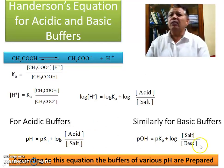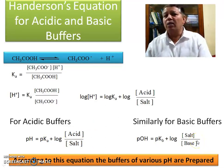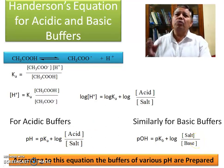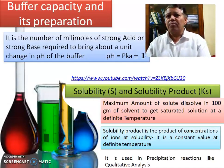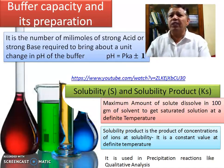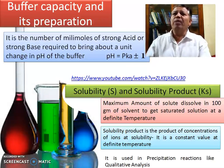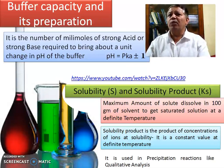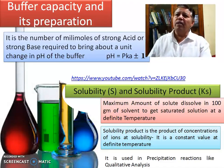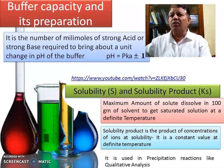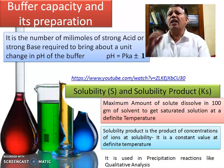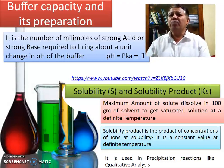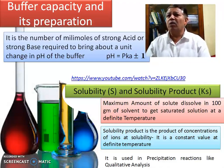According to this equation, buffers of various pH values are prepared and can be used at different pH conditions. Buffer capacity is the number of millimoles of strong acid or strong base required to bring about a unit change in the pH of the buffer. When acid or base is added to an acidic or basic buffer, the pH changes only slightly, and therefore it does not significantly affect the pH.